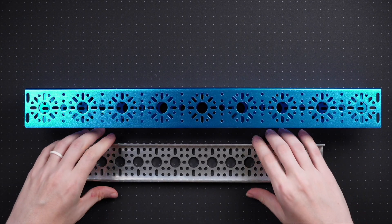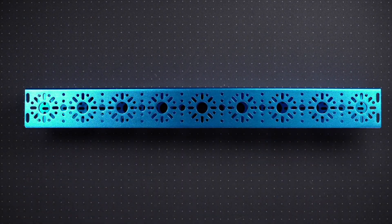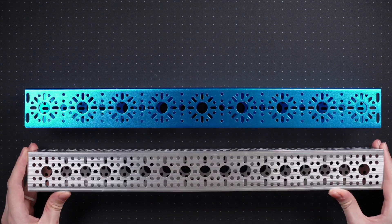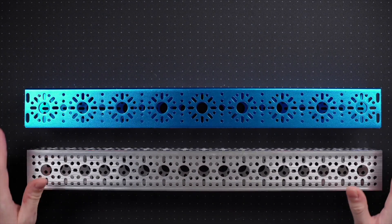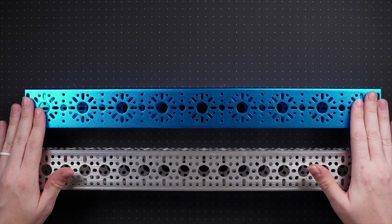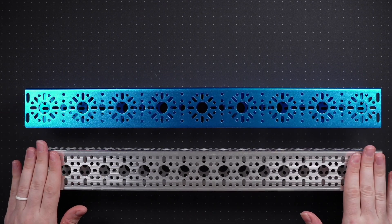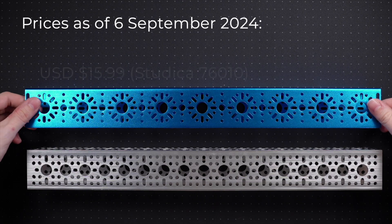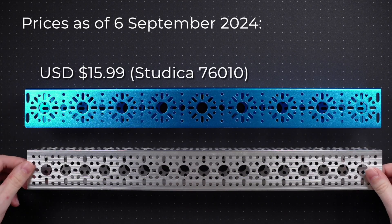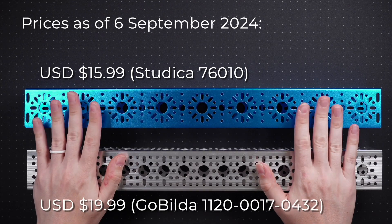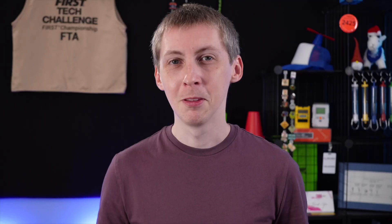Look and feel isn't the only reason why you might want to consider Studica Robotics structural material. Price is another one, because if you compare the prices of this 432mm U-channel in both Studica and Go Build A varieties, it goes for a cost of $15.99 for the Studica and $19.99 for the Go Build A. So for some components, you may find that Studica is actually cheaper. The hardware is really nice, but that's not all that Studica has to offer.